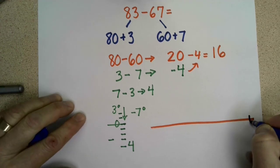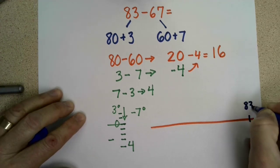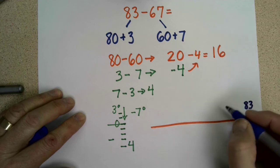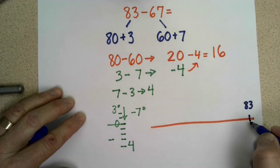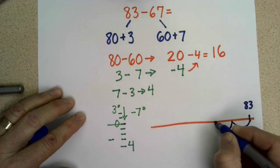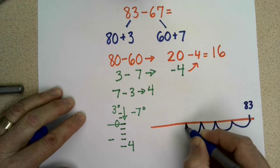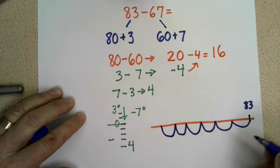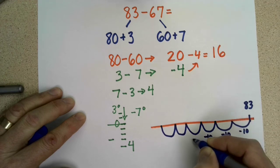So we're going to start with 83 on this side, and we are going to jump back 6 tens. So 1, 2, 3, 4, 5, 6. So each one of these is going to be a jump of 10.